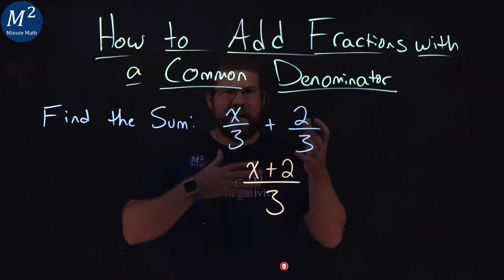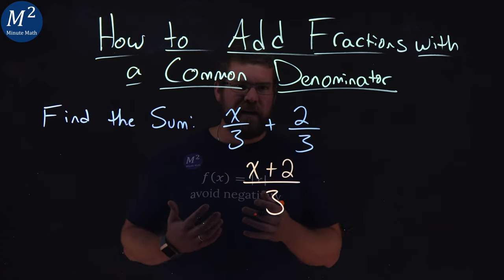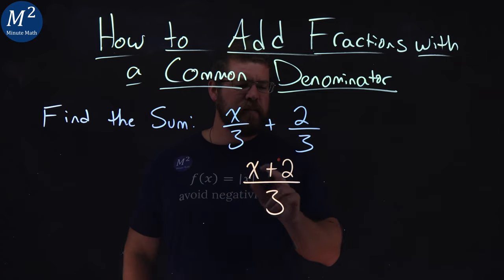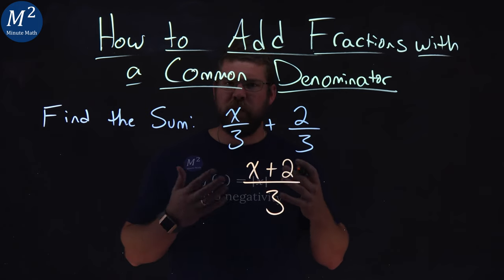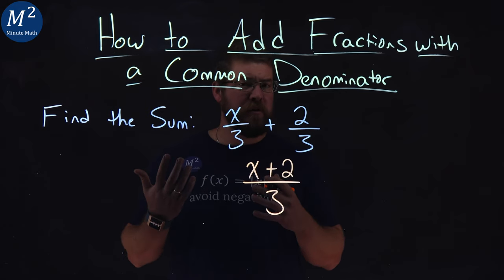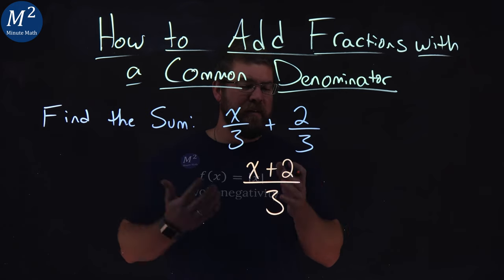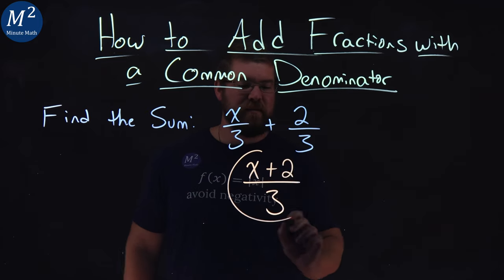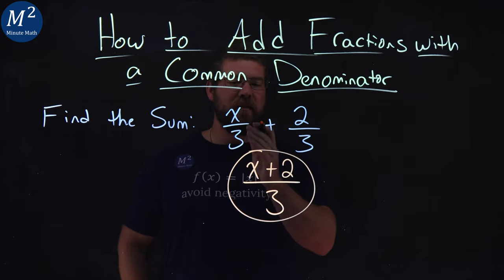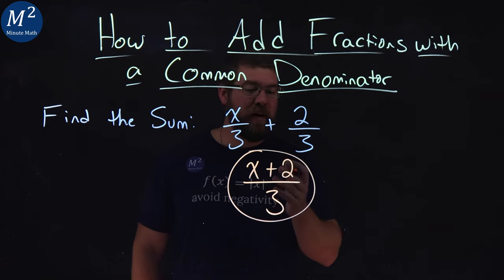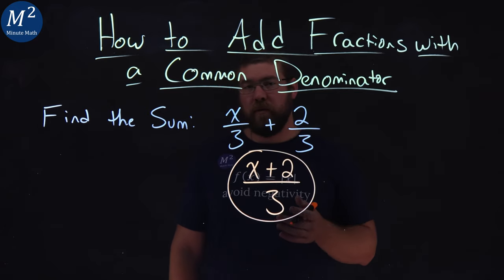Now normally here we would try to keep simplifying, but I think we're at it. x plus 2 can't simplify anymore. They're not like terms. And that's really it. There's nothing that can cancel out. So this whole thing, x over 3 plus 2 over 3, just simplifies to be x plus 2 over 3.